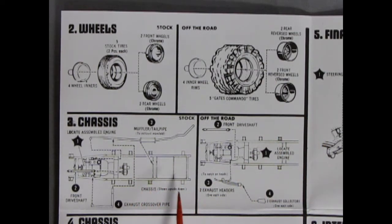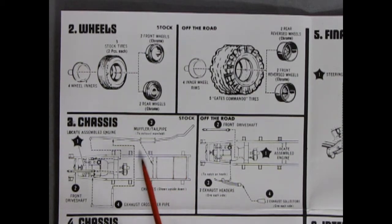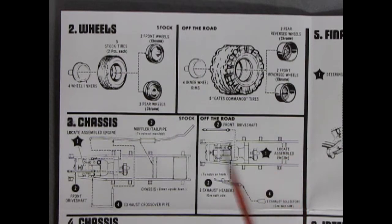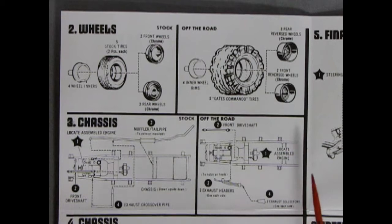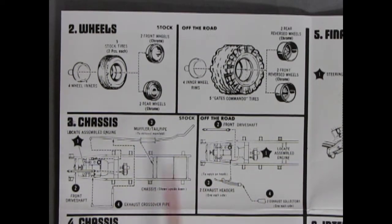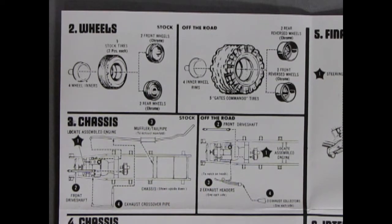And then you can put on your reversed wheels here in the front and then some for the back. Now our chassis, we've got our frame. And then it shows what's going on here, a muffler and tailpipe, exhaust crossover pipes. All this would be hooking up into your engine. It doesn't really show the engine going in, which is interesting. And then for off-the-road, we hook up our front drive shafts here going off from our transfer case and then exhaust hitters as well. It says locate assembled engine here. So yeah, all that would go together.